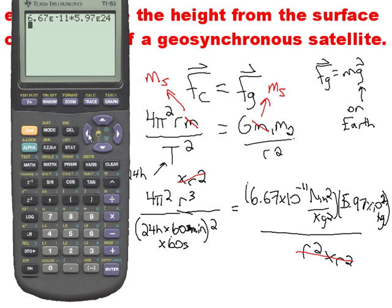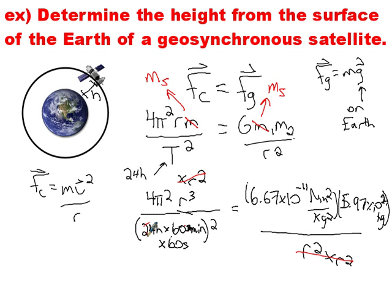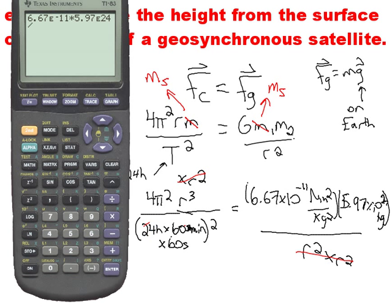6.67×10⁻¹¹ times 5.97×10²⁴. I'm going to divide that by - let's see. Oh, no, I'm going to times it by what I've got down here. Yes, I'm right. That is the mass of the earth. Oh, what a great feeling. I'm going to take 24 times 60 times 60 squared, and I'll figure out what that is. Okay, good. So now I've worked out the right-hand side.